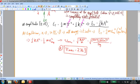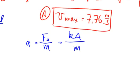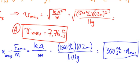In part B, we're finding the maximum acceleration, which occurs at the amplitude. From a free body diagram at the amplitude, the only force causing horizontal acceleration is the spring force — the normal force and weight are perpendicular to the motion. By Newton's second law, acceleration equals the net force divided by mass. The spring force equals k times the amplitude, so a = kA/m. Substituting the numbers, the maximum acceleration is 300 meters per second squared — roughly 30 g's.